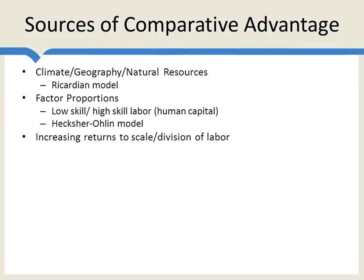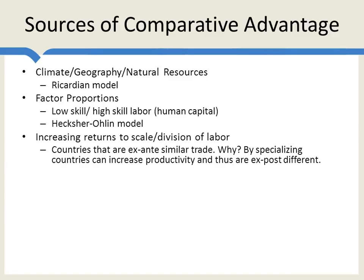Increasing returns to scale in the division of labor is another source of comparative advantage. This one is interesting because it's a source of comparative advantage which may be created by trade rather than existing naturally before trade. This focus came about when people realized that countries which are ex-ante quite similar trade quite a bit. The biggest trading partner for the United States is Canada, which looks a lot like the United States. Developed countries, in general, trade most with other developed countries. Theory of comparative advantage says that's a little odd, because you want to trade with countries that are different from you, not countries that are the same.